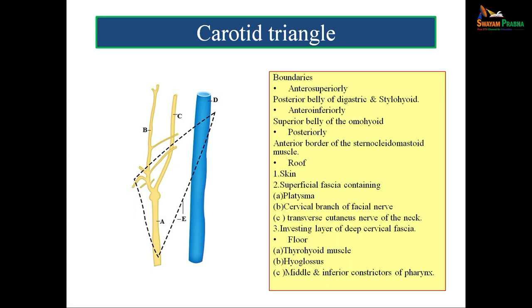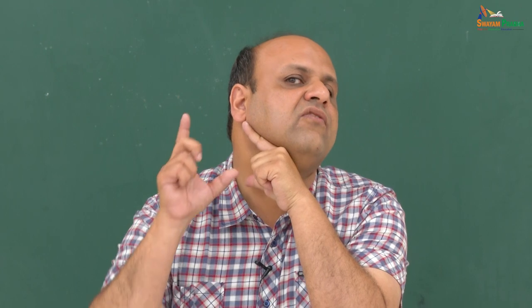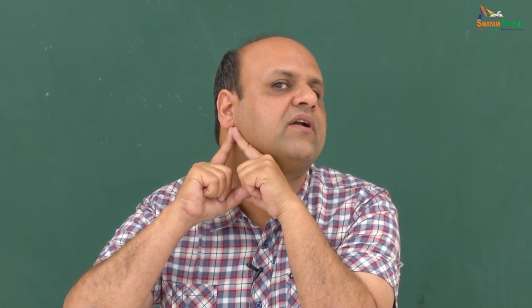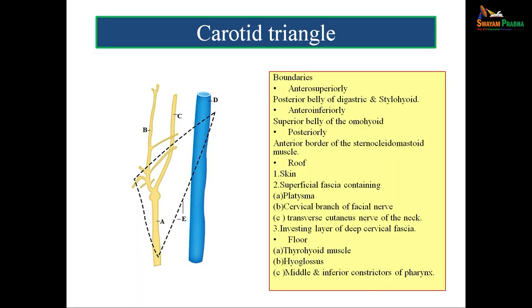The carotid triangle is important because within it lie the internal jugular vein and the common carotid artery dividing into internal and external carotid arteries. The boundaries are: anterosuperiorly, the posterior belly of digastric and stylohyoid; anteroinferiorly, the superior belly of omohyoid; and posteriorly, the anterior border of the sternocleidomastoid. The roof is formed by skin and superficial fascia containing platysma, the cervical branch of the facial nerve, the transverse cutaneous nerve of the neck, and the investing layer of deep cervical fascia.